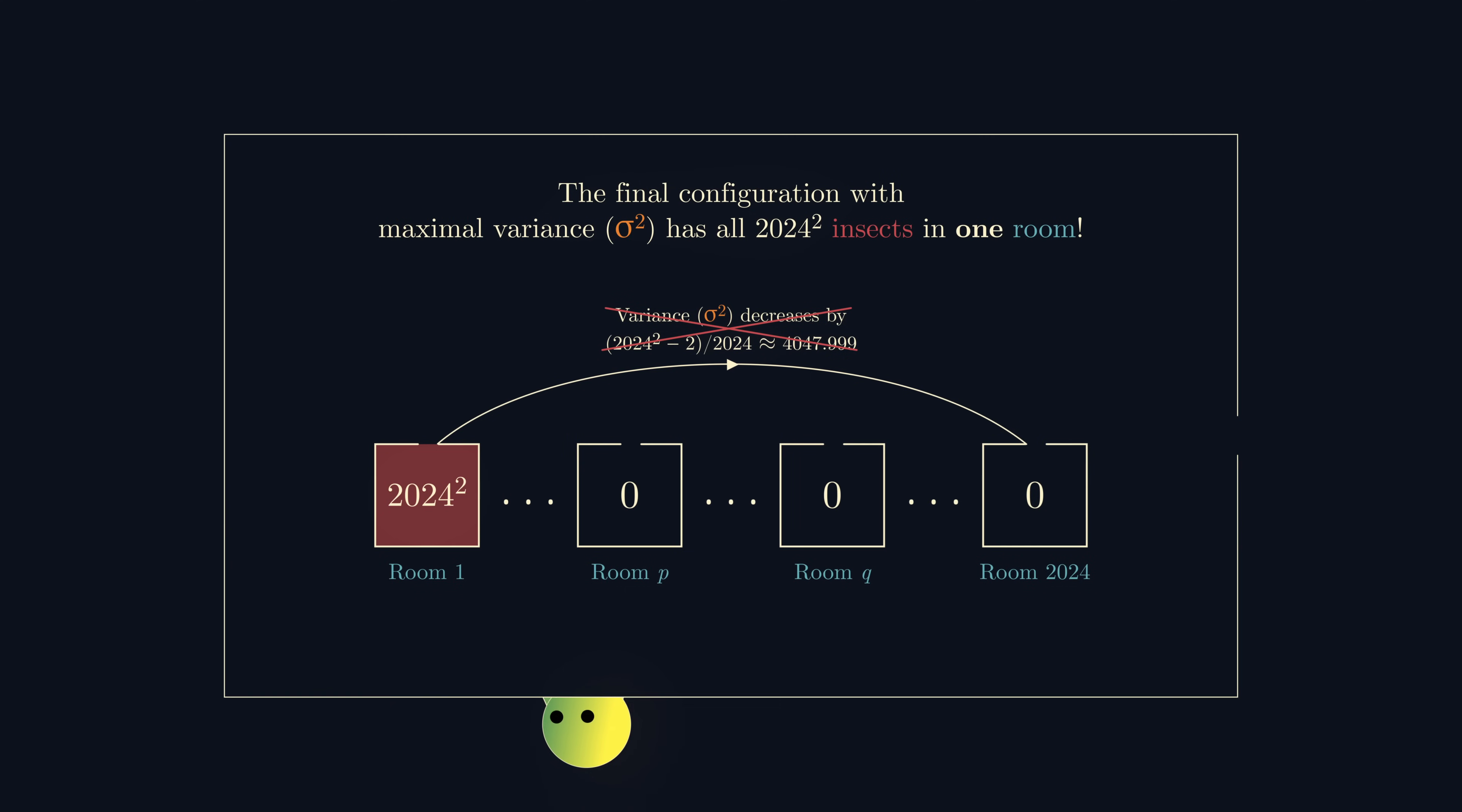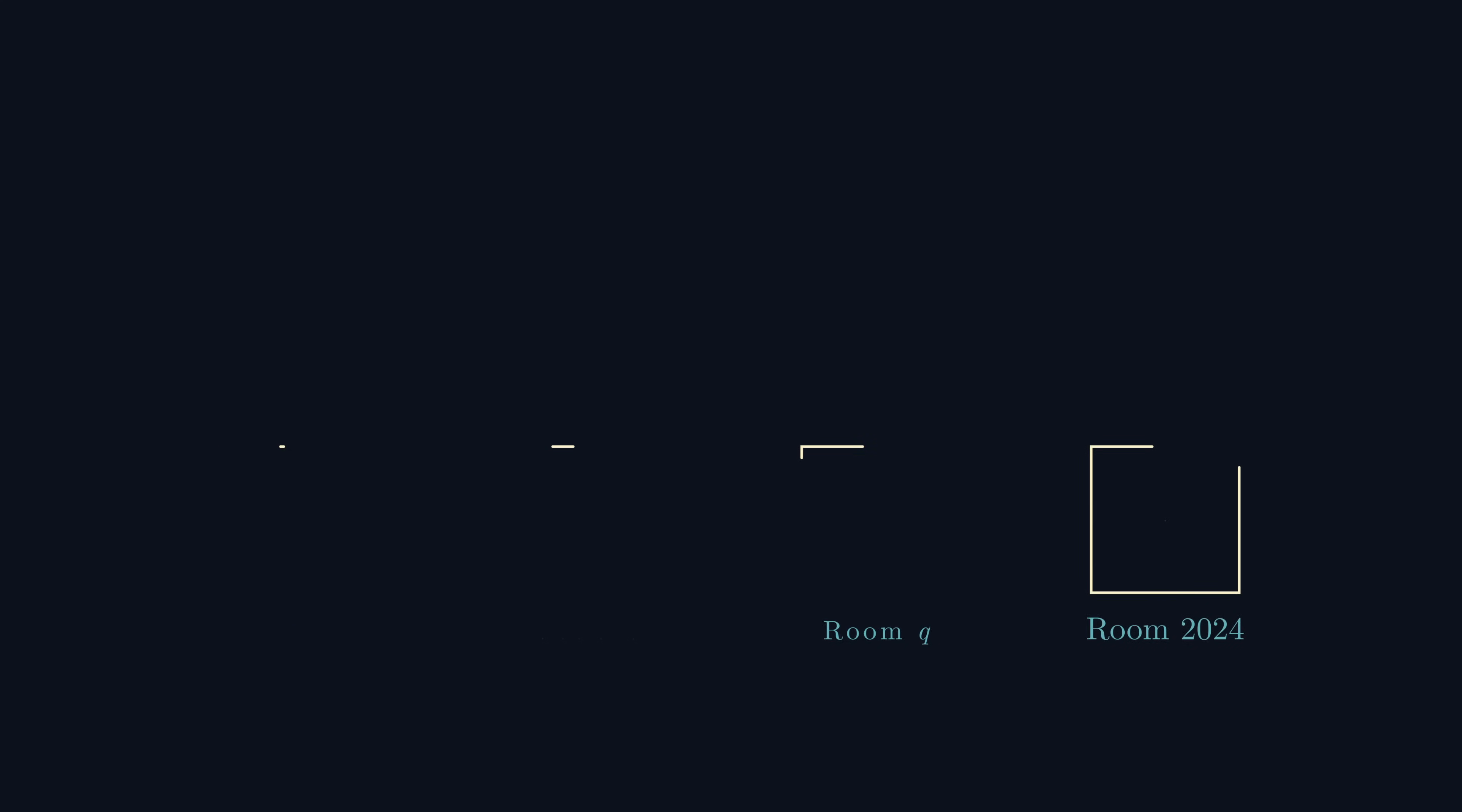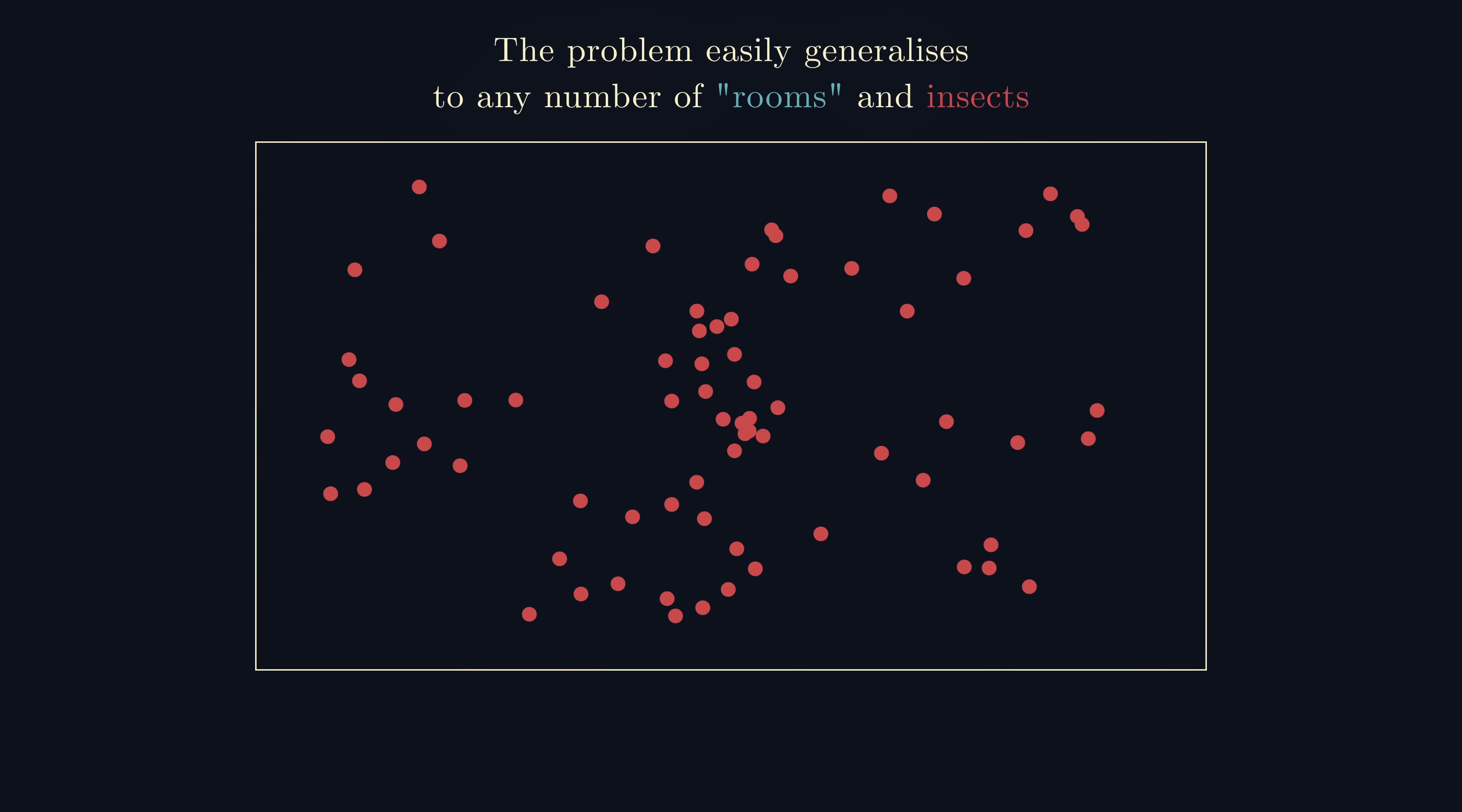What I found fascinating about this problem is not just how a concept from statistics made its way into an Olympiad problem, but also how this problem links to the biology of how an insect like an ant works. What we've effectively showed is that an insect like an ant can collectively group together in one cluster, without any sort of centralised or coordinated effort.